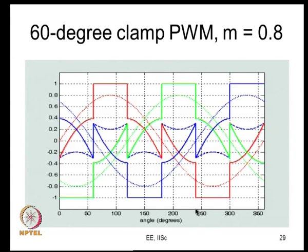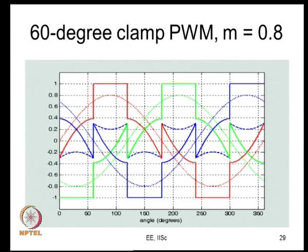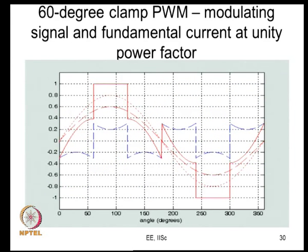When a phase is not switching at all, there are no switching transitions to worry about, so there is no dead time error. Only when a phase switches do you worry about whether it switches at the scheduled time or late by Td. In bus clamping PWM, looking at the error voltage for R phase: there will be no error voltage during clamping intervals, but there will be error voltage in the switching portions.